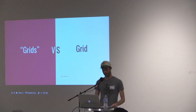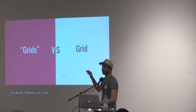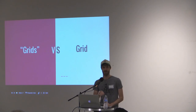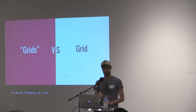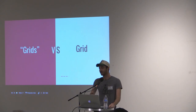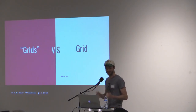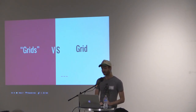I want to talk about the difference between grids and what grid is. The way things exist right now is the quotation-mark version — it's not really a grid, but we'll talk about that in a second. Recently, developers were blessed with this new CSS model called Flexbox, which allows you to build things you always assumed were possible on the web, like vertically centering things and making content stretch to the same height as a different box of content. And we've got that now, which is super cool.